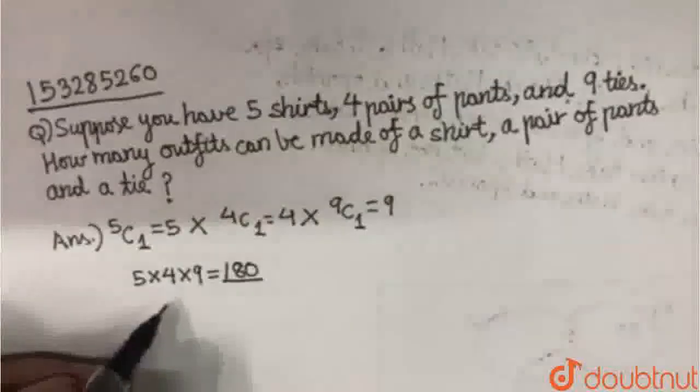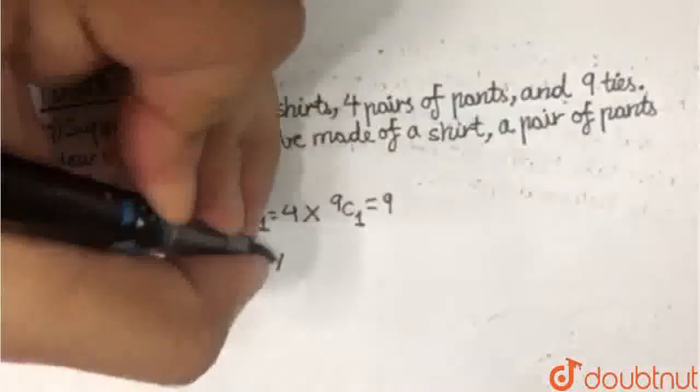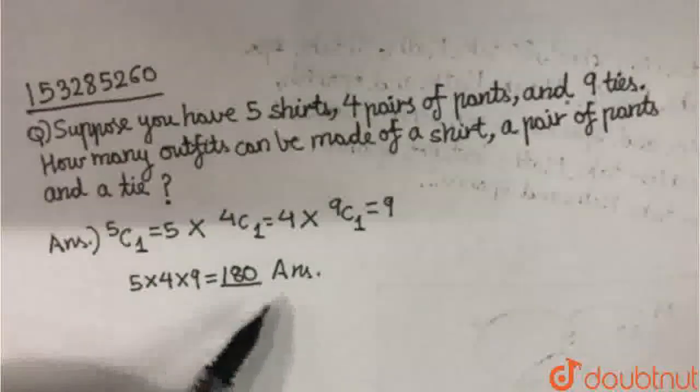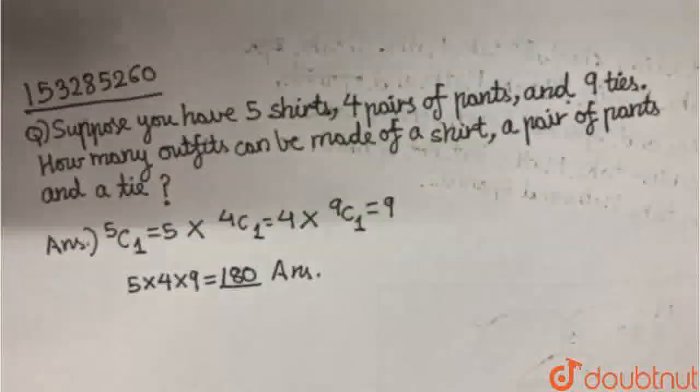You can see 5 into 4 is 20, and 20 into 9 is 180, and so 180 becomes our answer. 180 is our answer. I hope this is clear to you. Thank you.